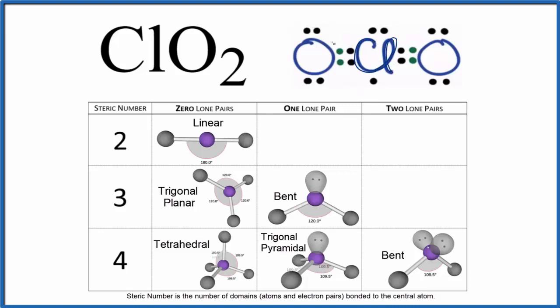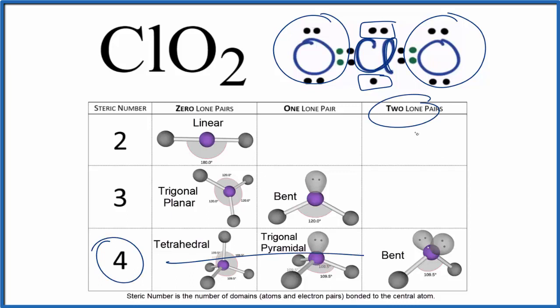We can look at the steric number. We have one, two, three, four things bonded. So our steric number is four, and two of those things, these right here, these are lone pairs. We're going to count this as a lone pair. So four things, two lone pairs. We go over and we have a bent molecular geometry.